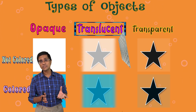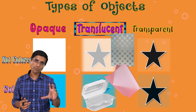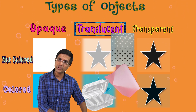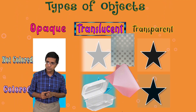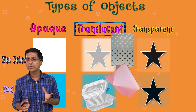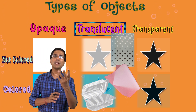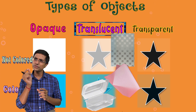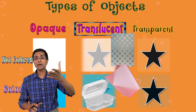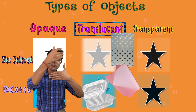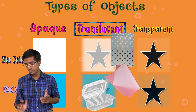Translucent objects — examples can be frosted glass, butter paper, the tracing paper that you use, ground glass. When glass is ground and shattered into small pieces, it behaves like a translucent object. Thin sheets of plastic — a very thick sheet of plastic would be 100% opaque, but some thin sheets of plastic, for example polythene bags, if you look through them, some of them would appear to be translucent. You would be able to make out what's on the other side, but not clearly.